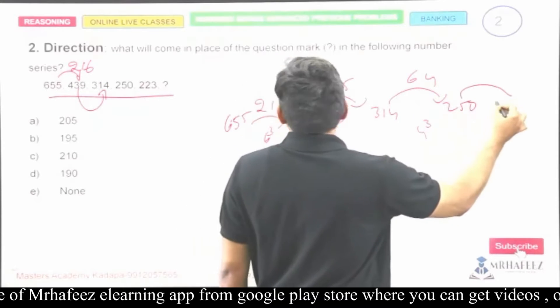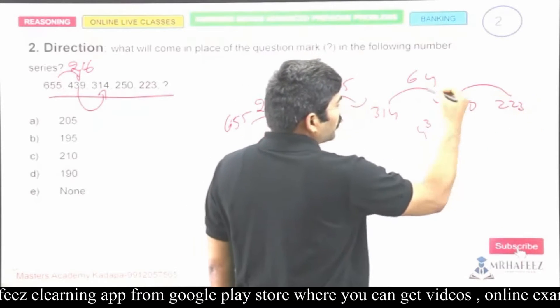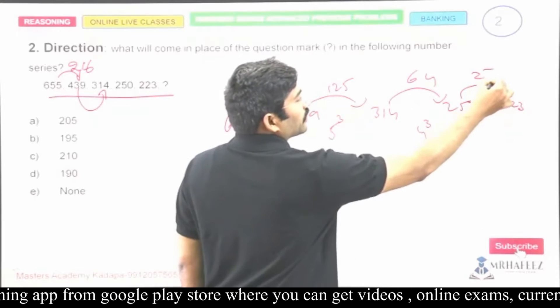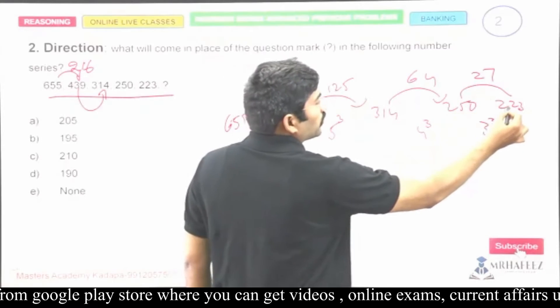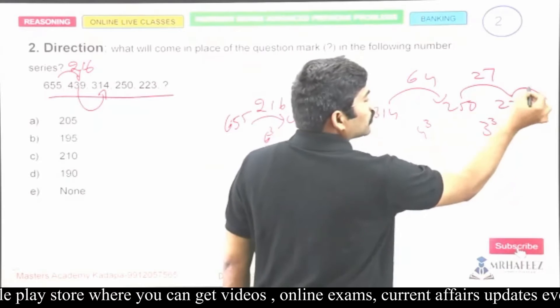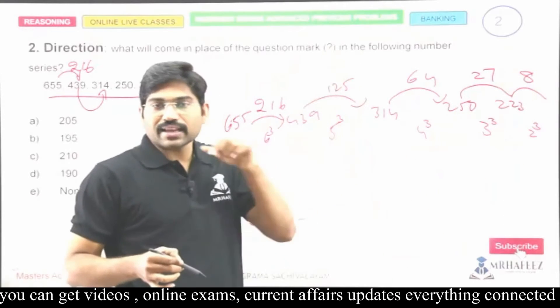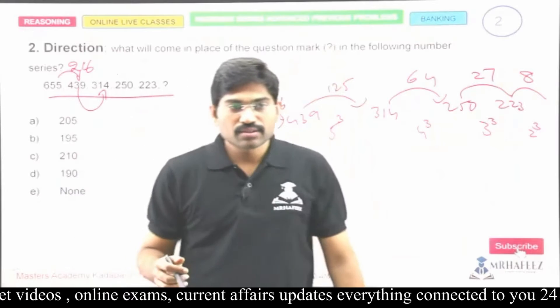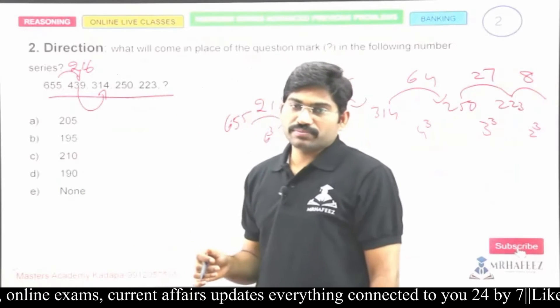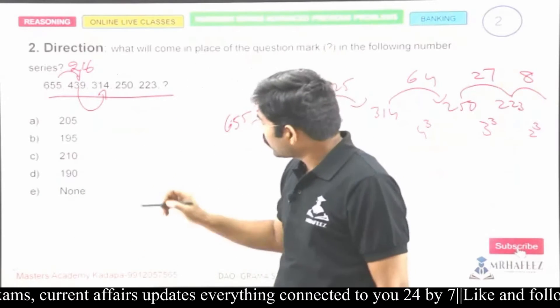Next, two twenty-three. The difference is twenty-seven, so it's three cube. Next difference should be two cube. Two cube is eight, so two twenty-three minus eight is two one five. So none of the above. Yes or no? Two one five, none of the above.